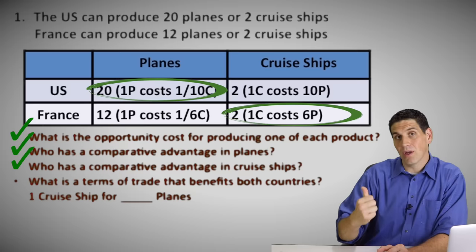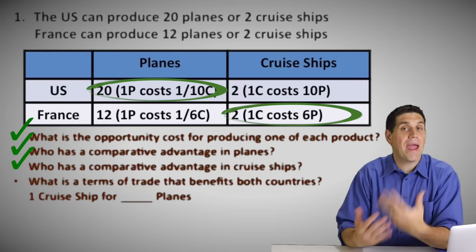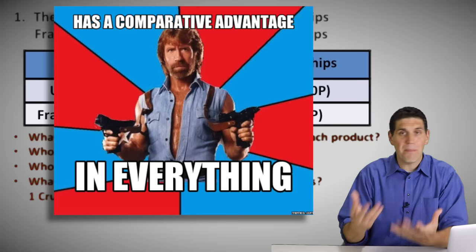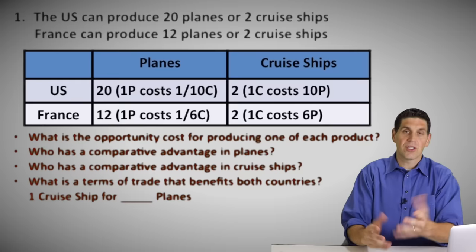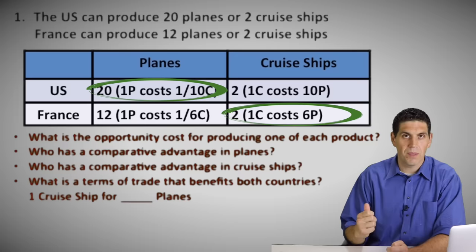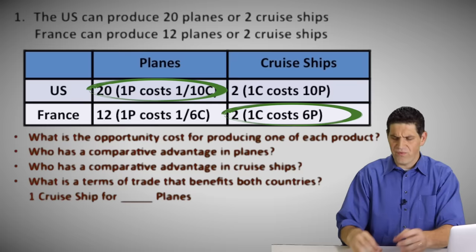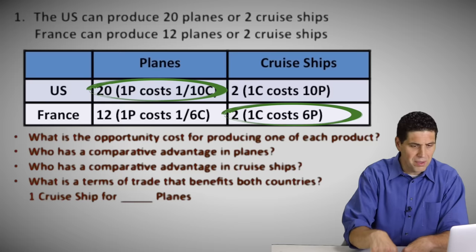Let France build the cruise ships and then they can trade and both benefit. Notice that the United States doesn't have a comparative advantage in both — that's not possible. A country can't have a comparative advantage in both products. Once you figure out that the United States should be making planes, you're done — you know France should be producing the cruise ships. And if your numbers suggest a country has a lower opportunity cost in both, you messed up somewhere.